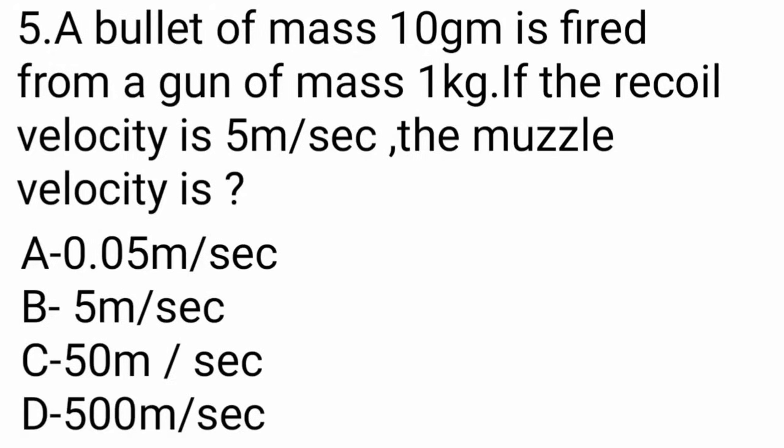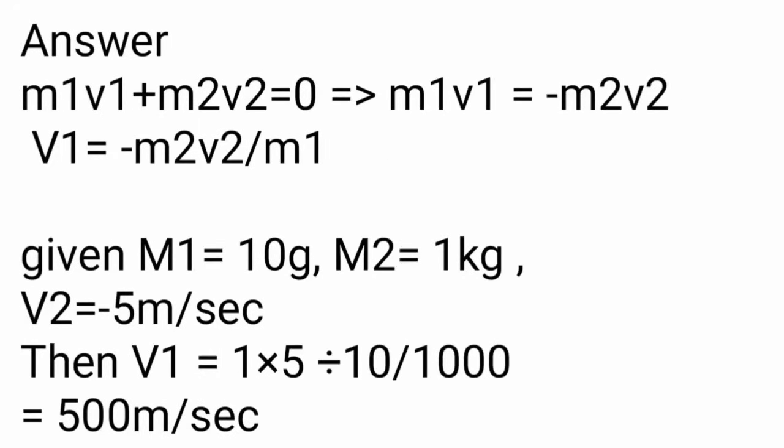The explanation uses the law of conservation of momentum. The formula is M1V1 plus M2V2 equals zero, so M1V1 equals minus M2V2. Using the given values of M1, M2, and V2, we find the muzzle velocity.